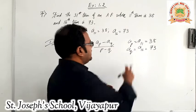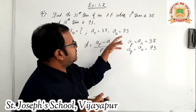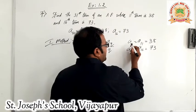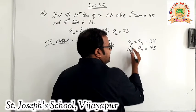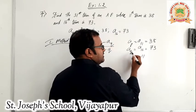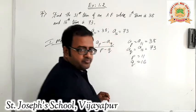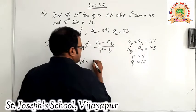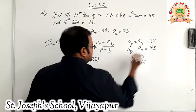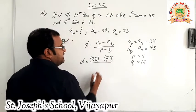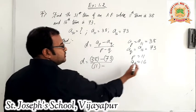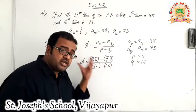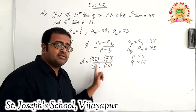Some people have a convention that the bigger number is taken as AP and the smaller as AQ — that can be done, and the opposite is also true. If AP is A11, then P is 11. If AQ is A16, then Q is 16. Putting these values into the formula: D is equal to 38 minus 73 upon 11 minus 16. Had you taken it the other way — AP as 73 and AQ as 38 — it would be 73 minus 38 upon 16 minus 11, and the final answer would be the same.